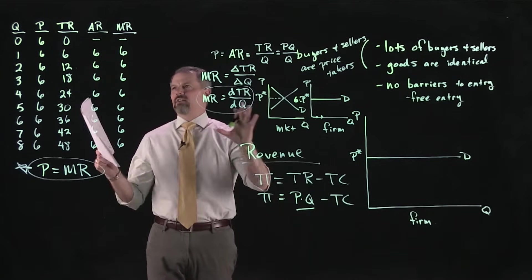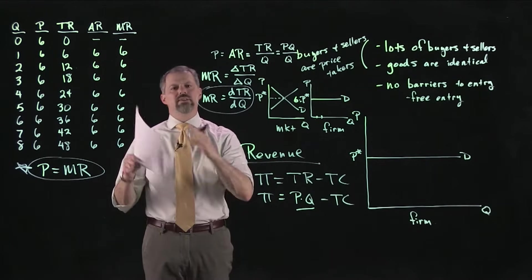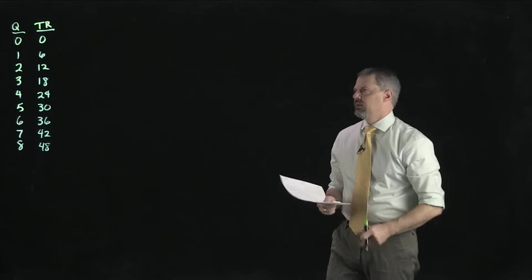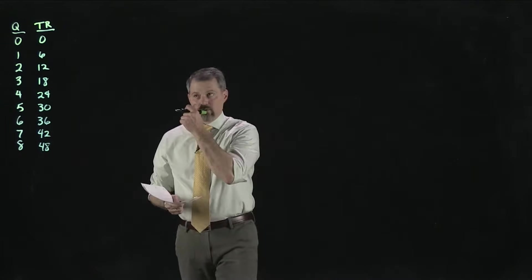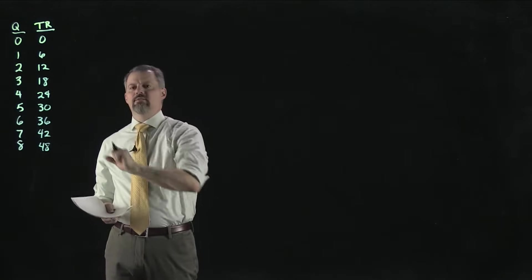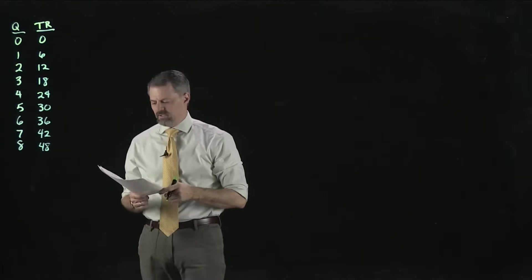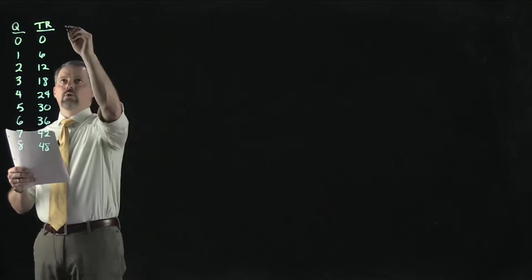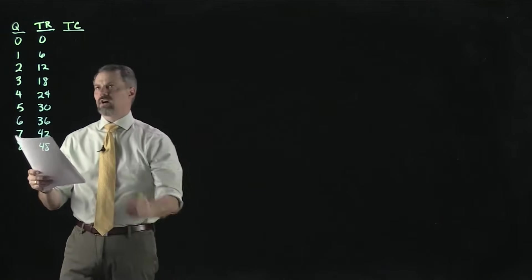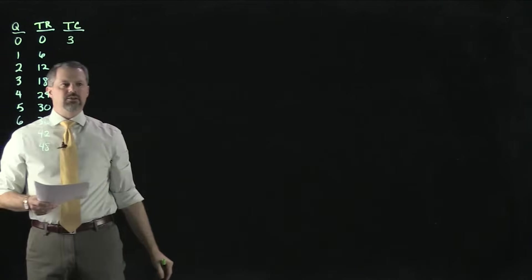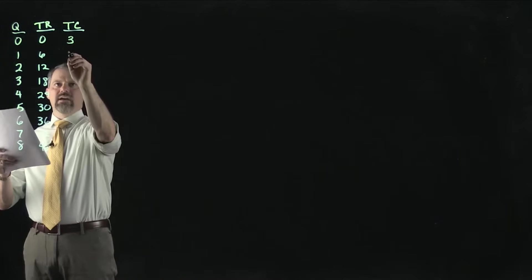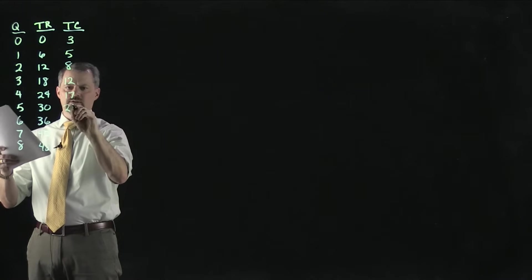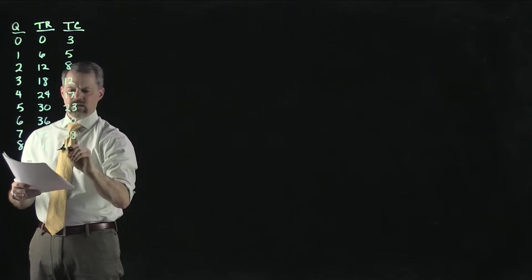Now let's reproduce part of the revenue table and link it with cost information to see what the right quantity is to produce. We have quantity and total revenue. Let's add some total cost numbers: if they produce zero gallons the total cost is $3, then $5, $8, $12, $17, $23, $30, $38, and $47.